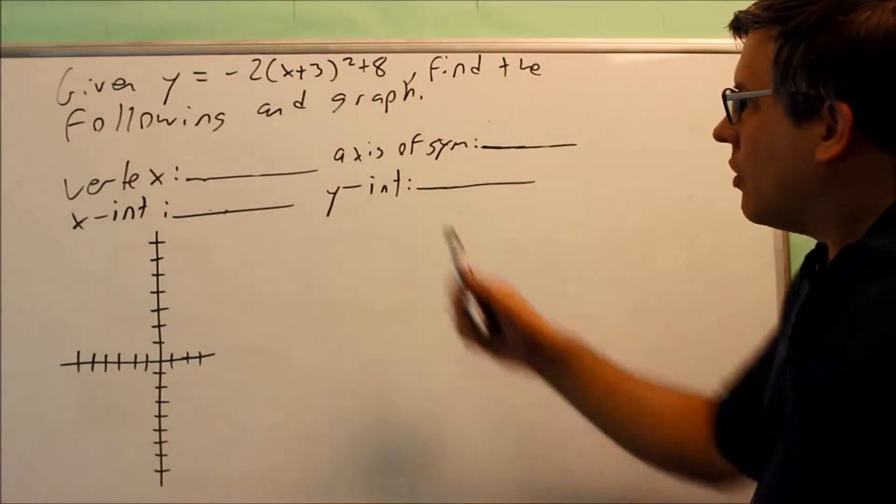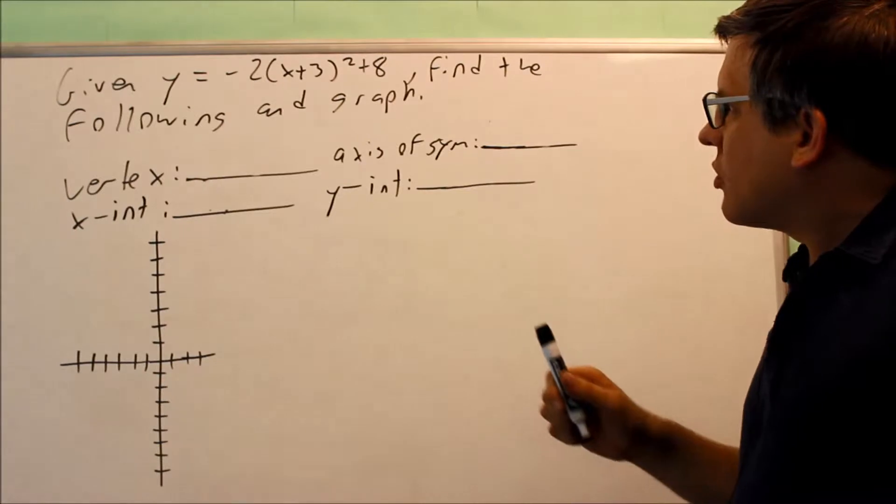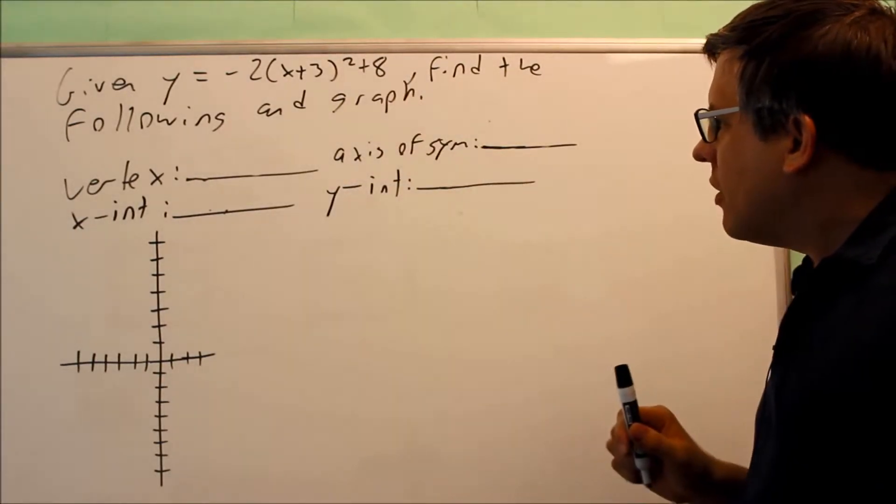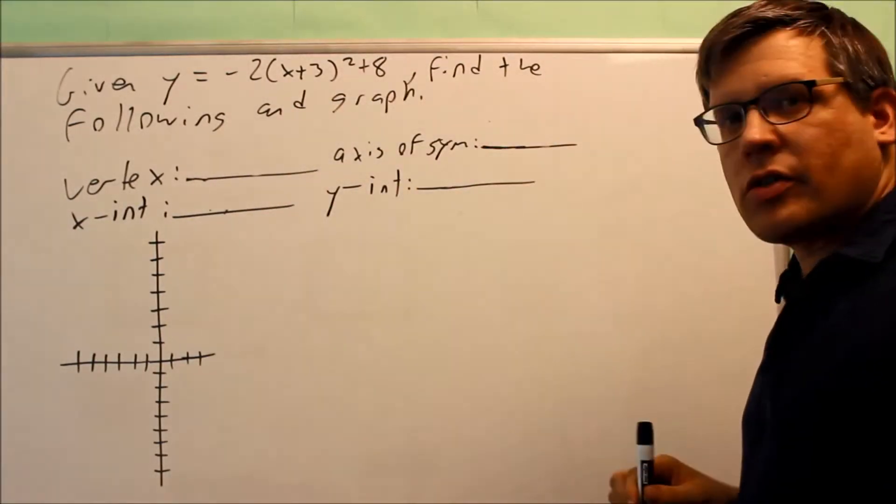Okay, here's the equation that we're given: negative 2 times the quantity x plus 3 squared plus 8. And here's all the information that they want us to find.